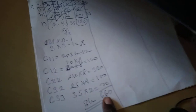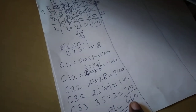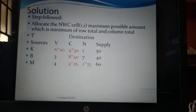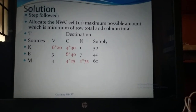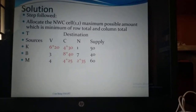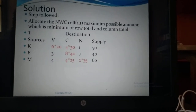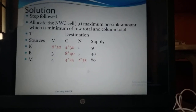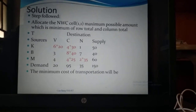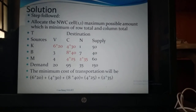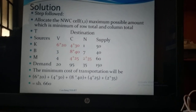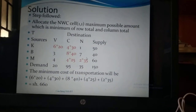Here is our final presentation. The cells marked red establish our minimum cost schedule: 6×20, 4×30, 8×40, 4×25, 2×35. The minimum total transportation cost is 660.